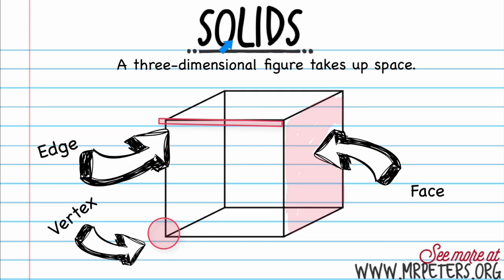Today we're going to talk about solids. A solid is a three-dimensional figure that takes up space. Here you can see I have a cube. A cube is a very well-known solid. A solid has room to put things inside. For instance, a box is a solid — this one is a cube. It kind of looks like a box.